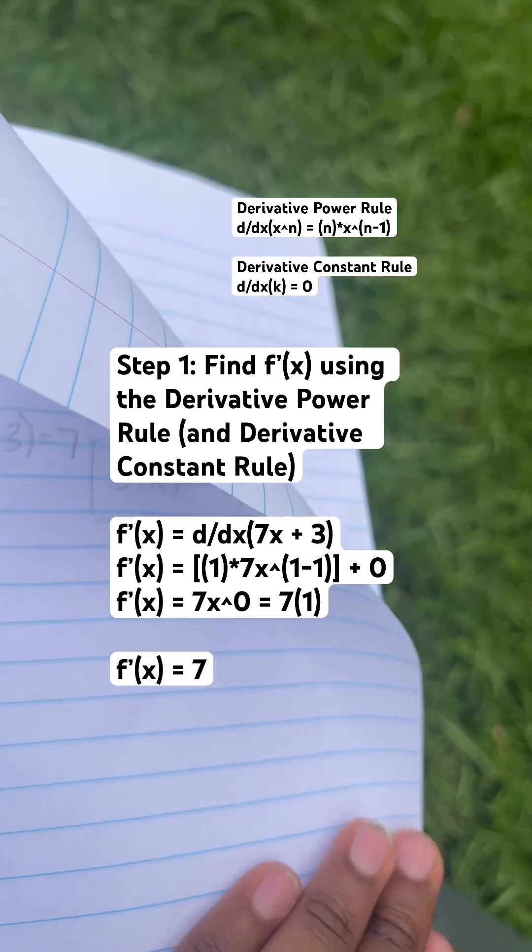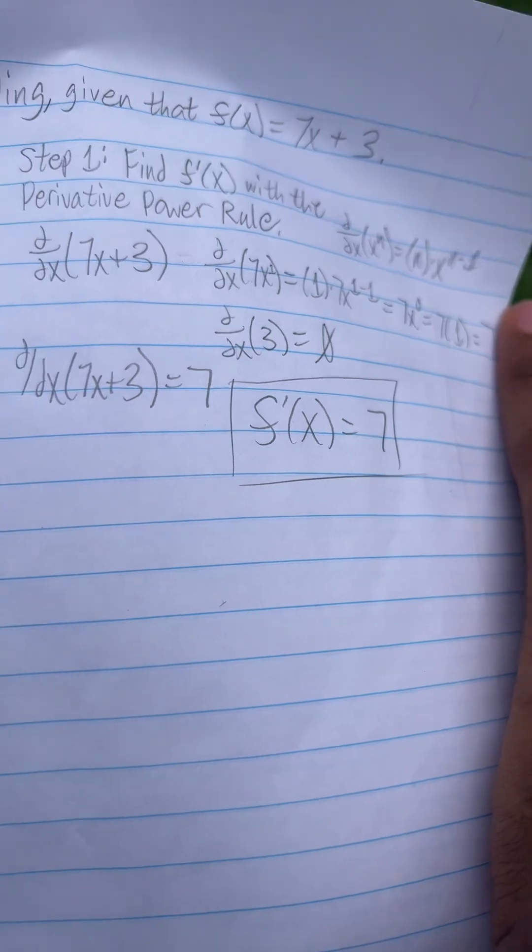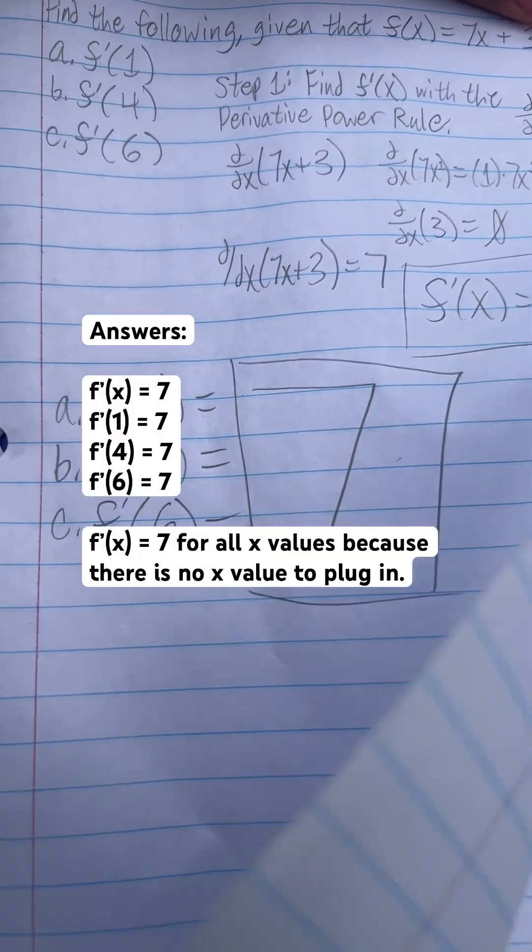So derivative f(x) is equal to 7. And since there is no x value, all these equal 7.